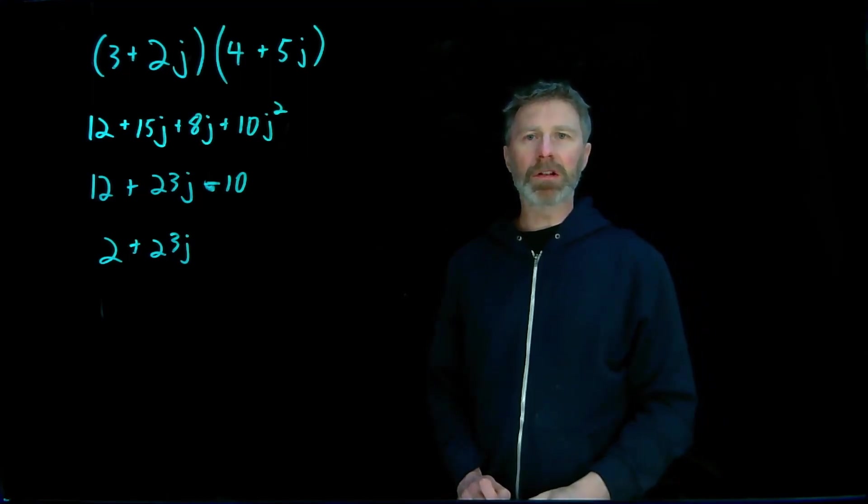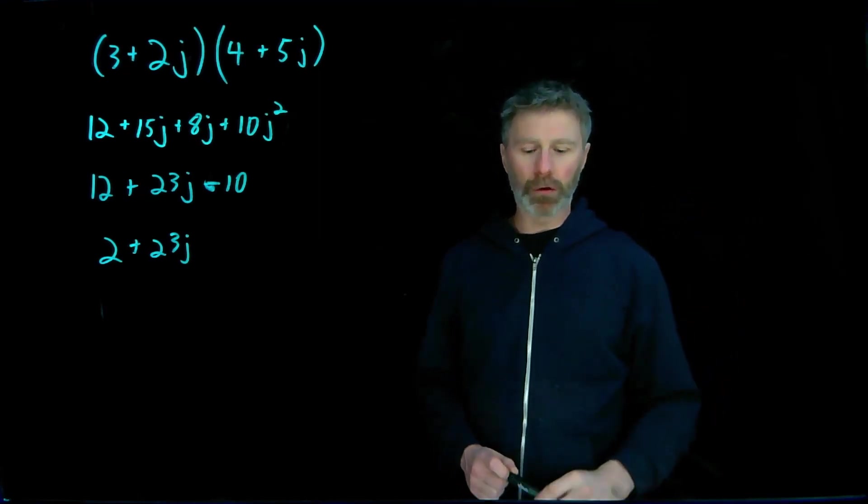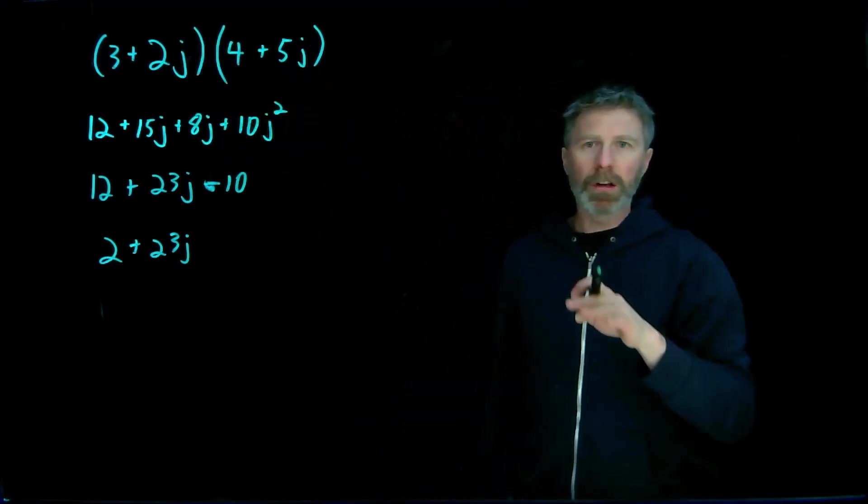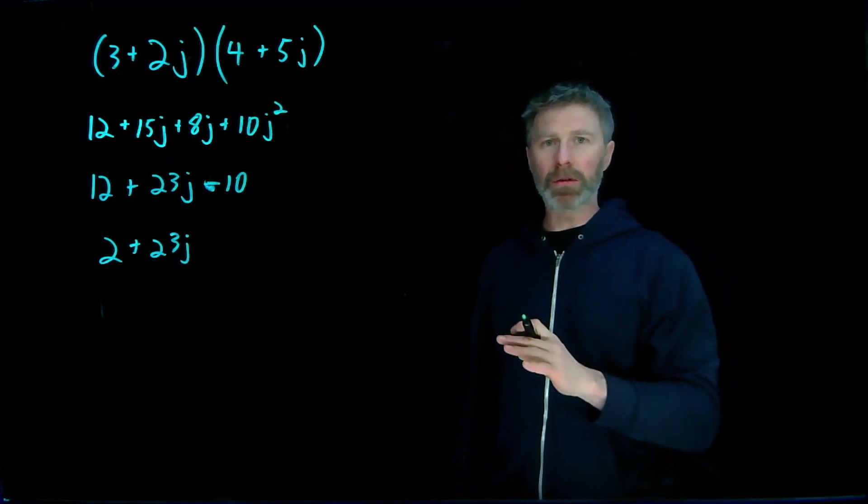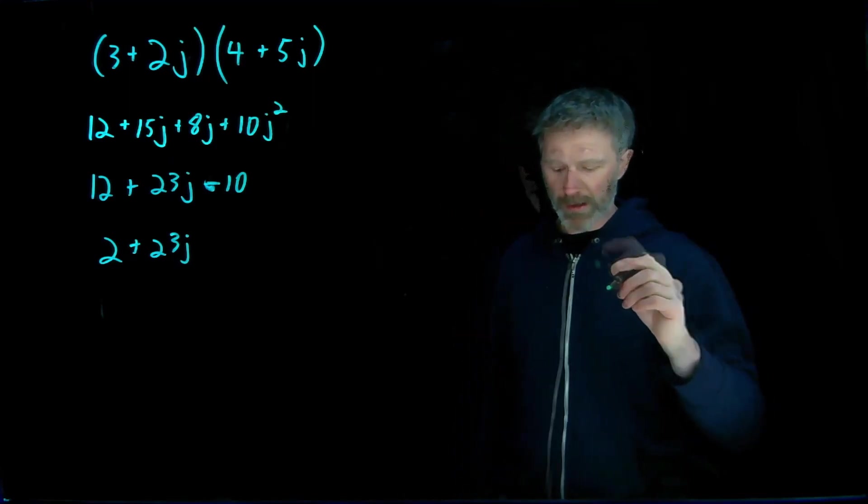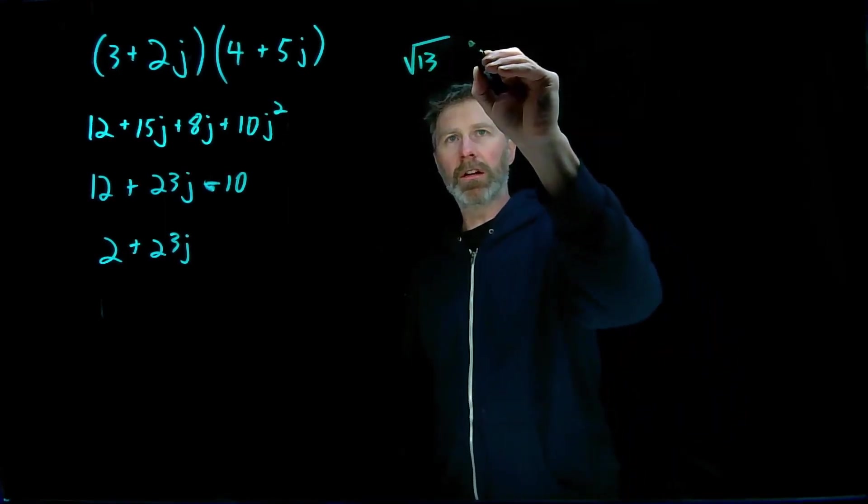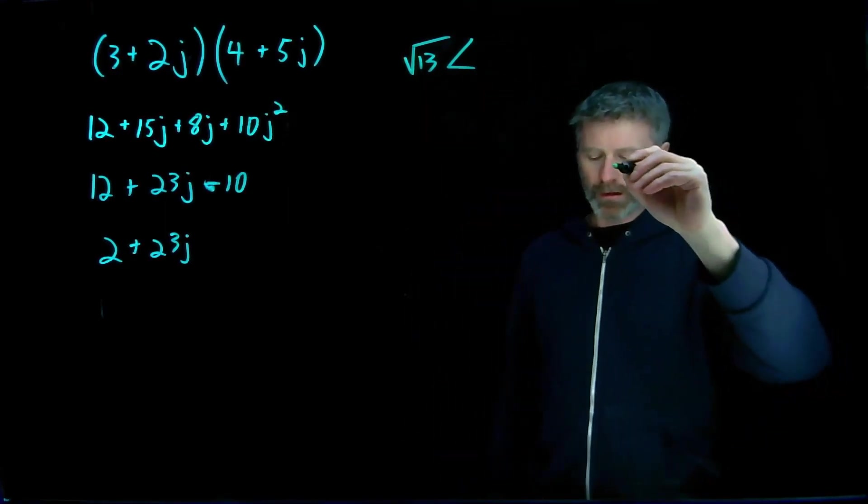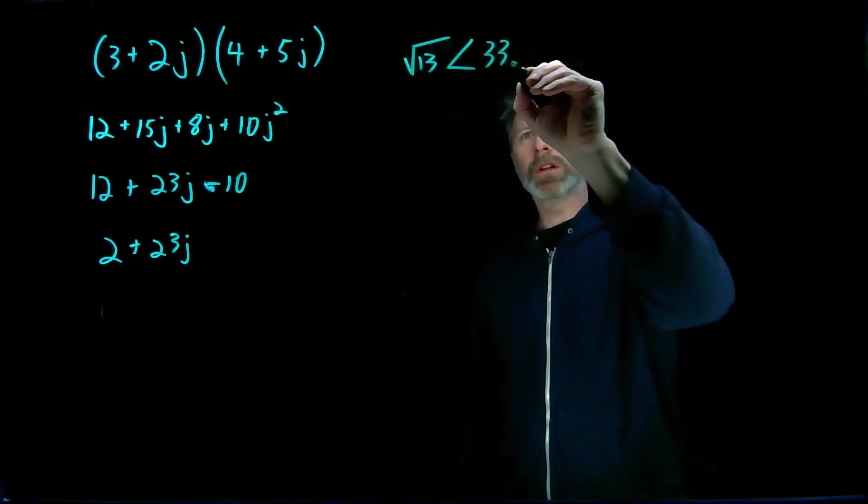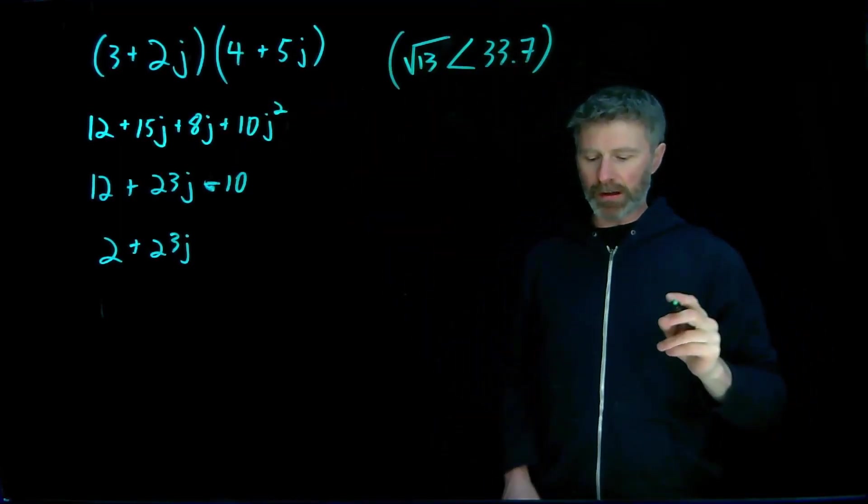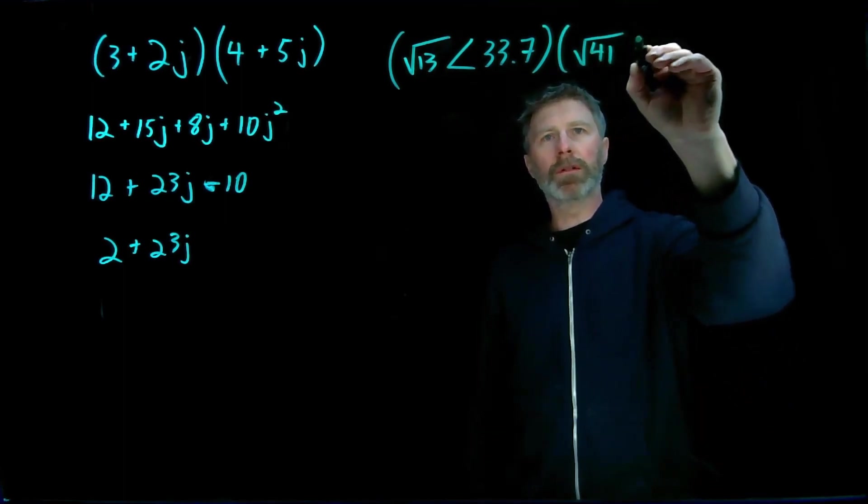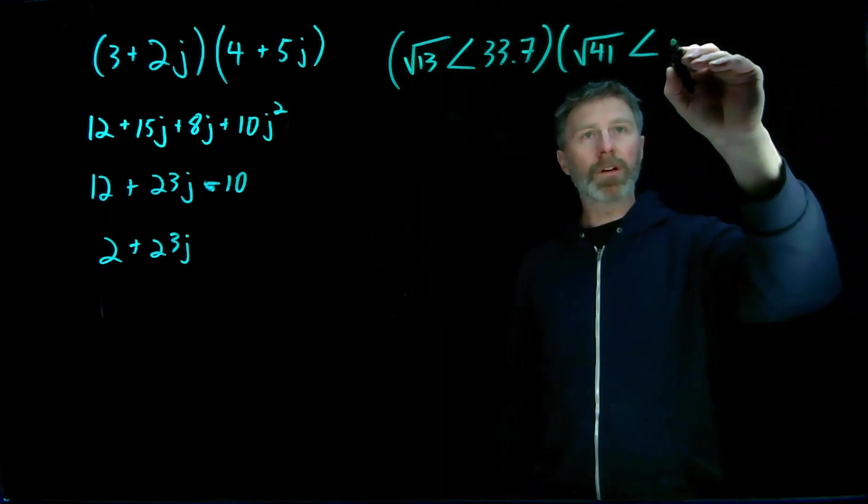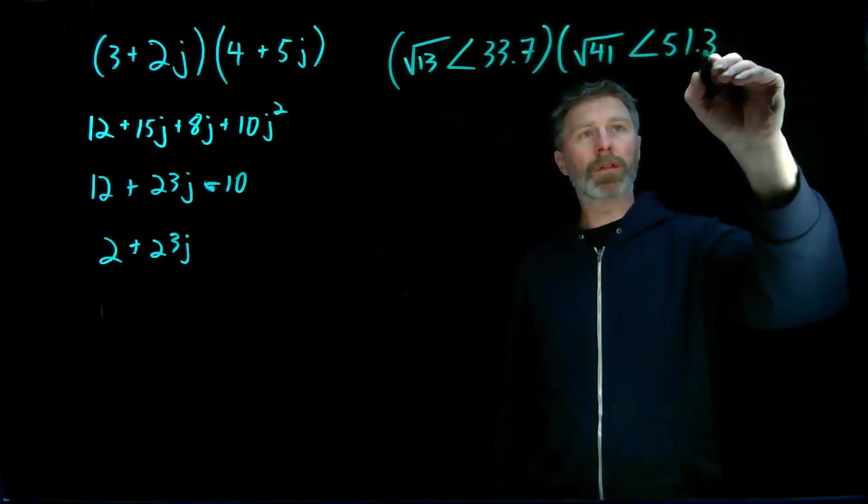Multiplication with complex numbers is much easier though when you are in vector form or in the polar coordinate form. And I'm going to convert these into polar coordinate form. You can check out my previous video on how to do that conversion. I'm not going to do it here. The 3 plus 2j is equal to root 13 with an angle of 33.7. And 4 plus 5j is equal to root 41 with an angle of 51.3 degrees.